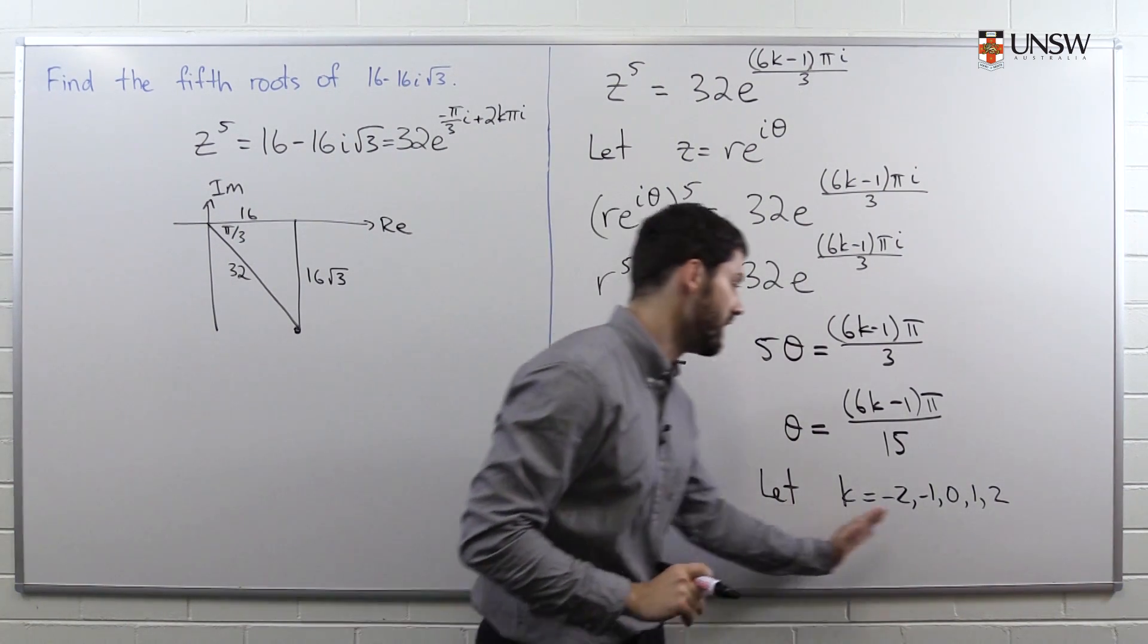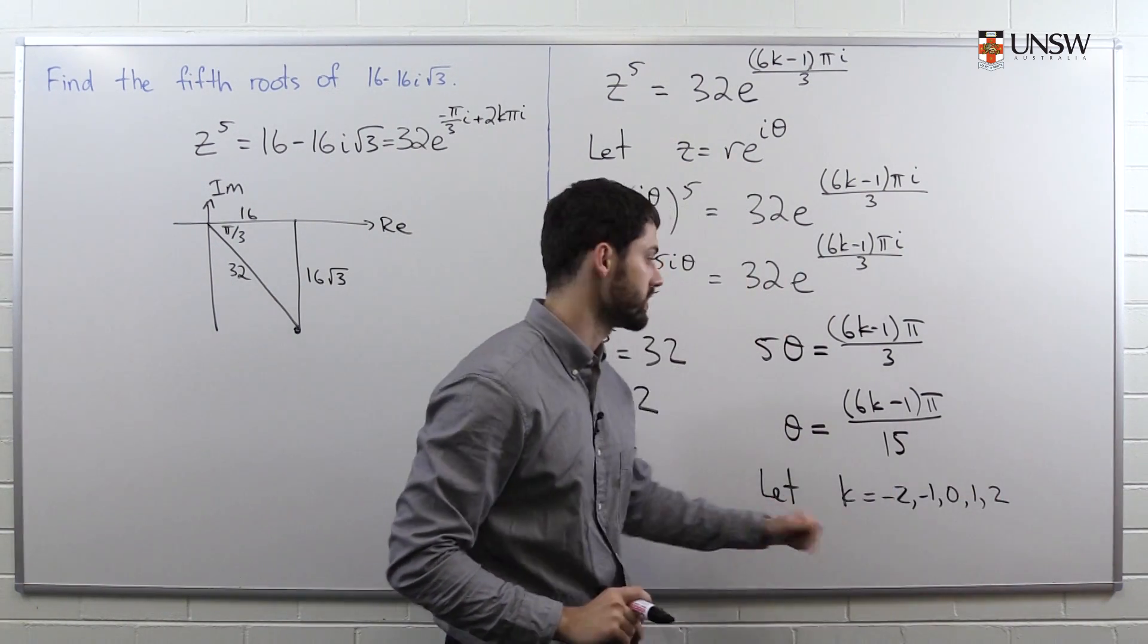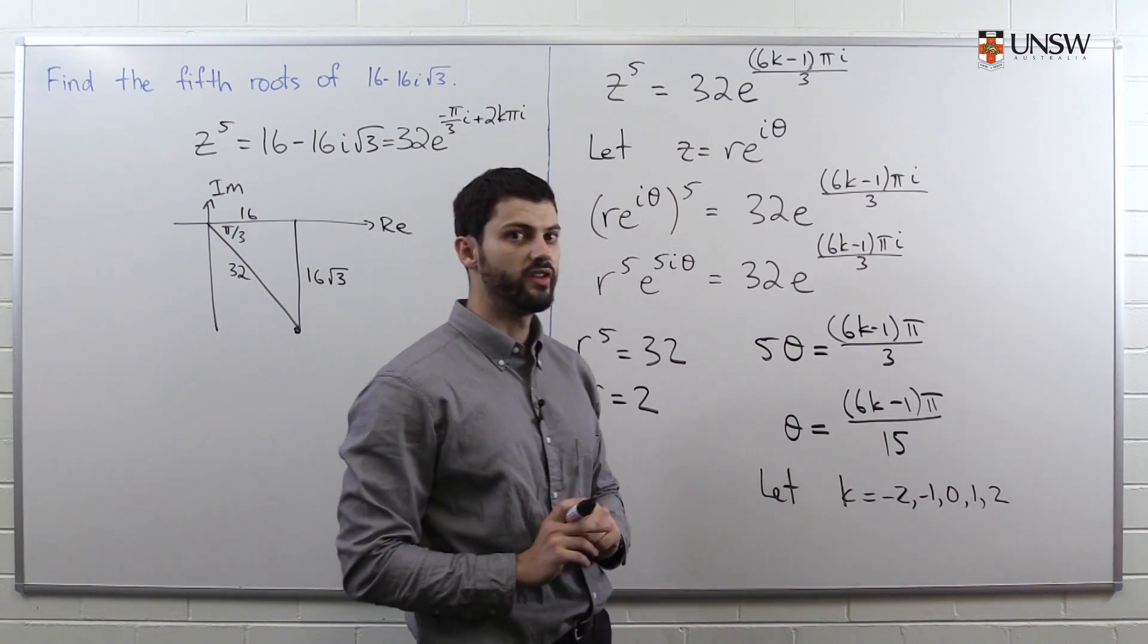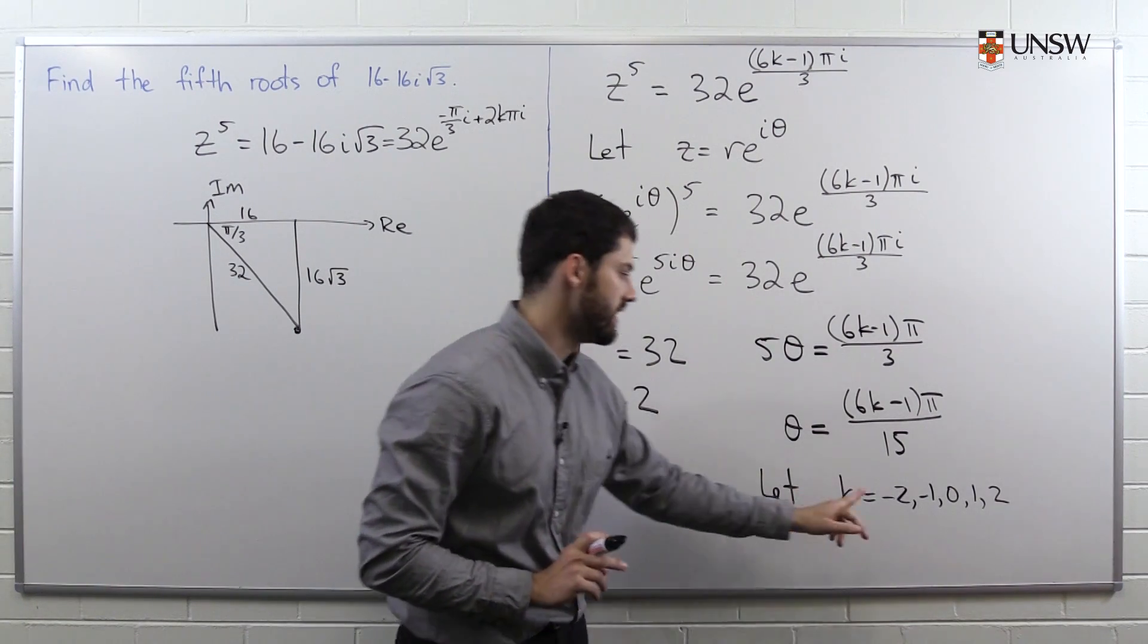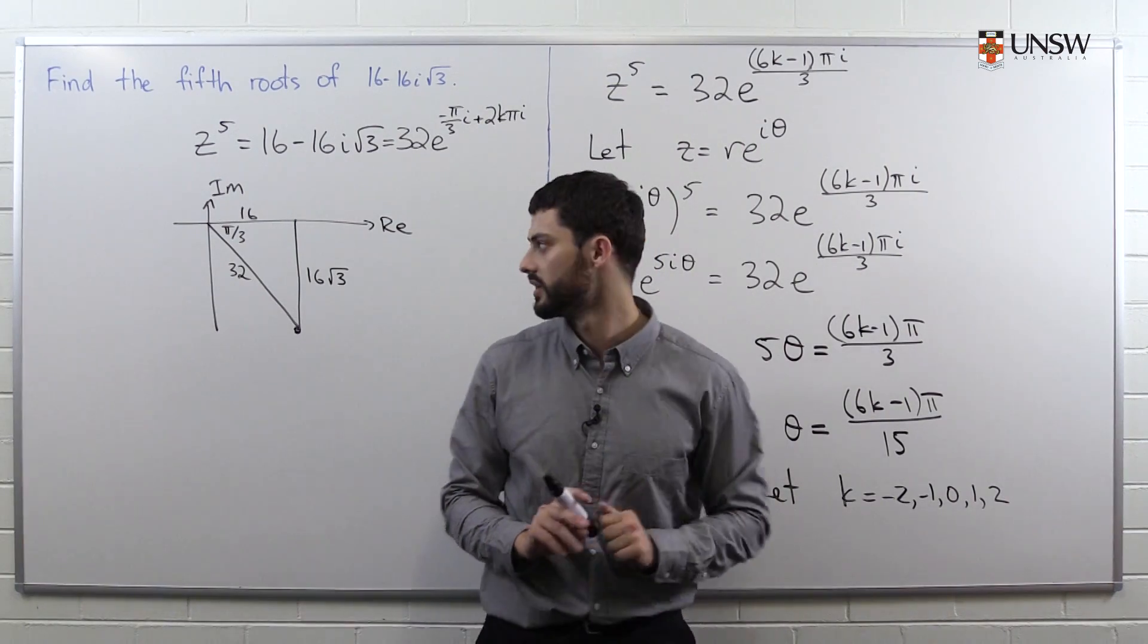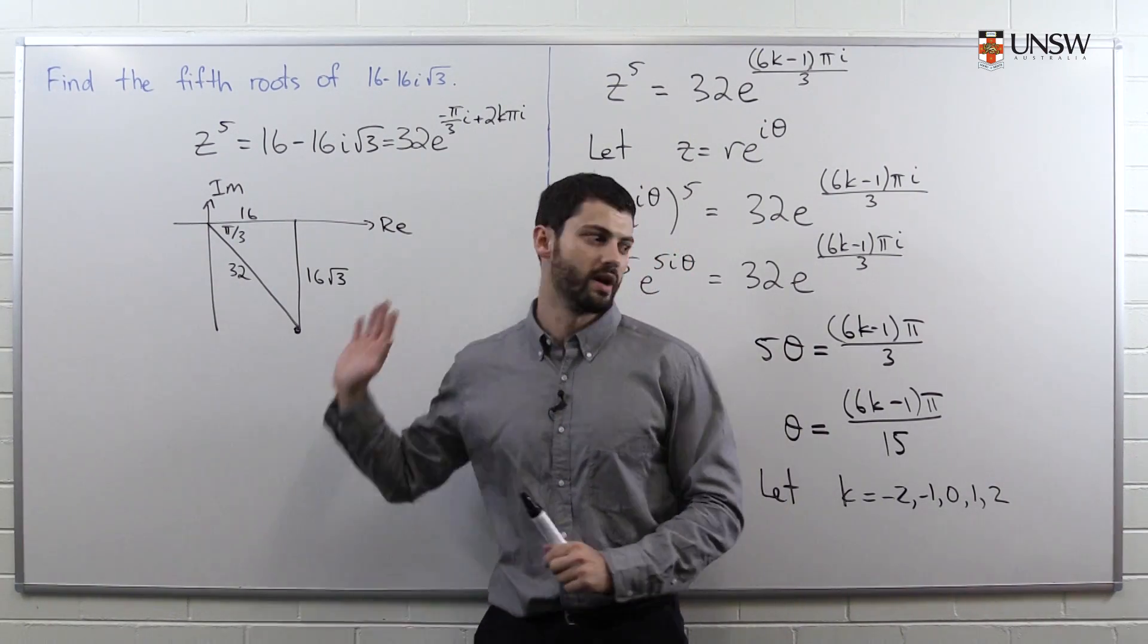I'm using the fact that I know that this equation has 5 roots. If I didn't know this, I could try substituting in more values. I could keep going here, maybe try 3, and then you will see that substituting in 3 will give me the same complex number as substituting in -2. Let's substitute these values of k over here.